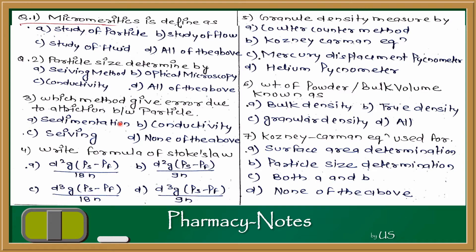Question 3: Which method gives error due to attrition between particles? The options are sedimentation, conductivity, sieving, and none of the above. The sieving method is also used for size reduction — due to friction and vibration during sieving, particle size can be altered. So the answer is C — sieving method.